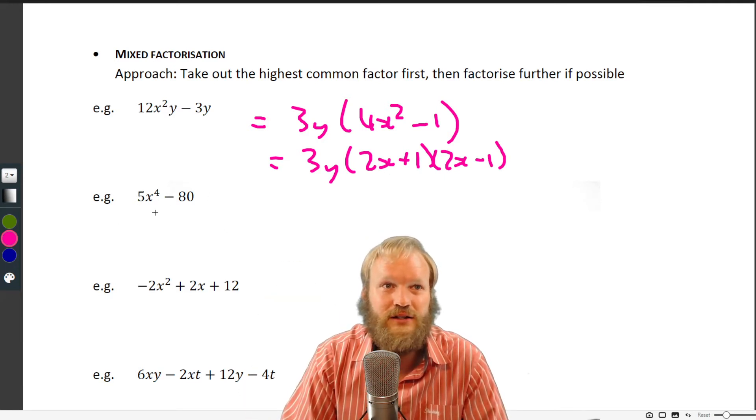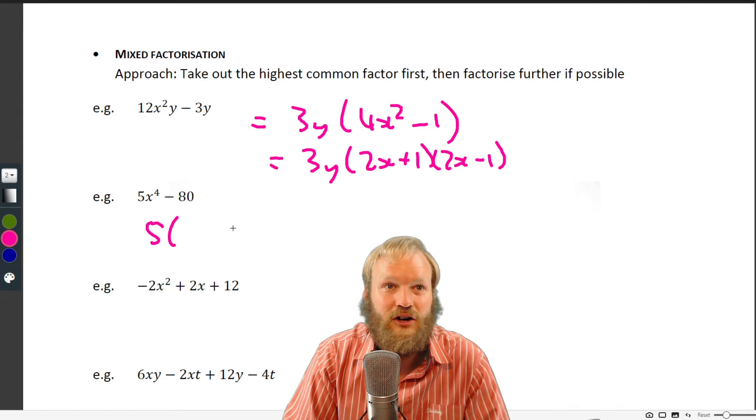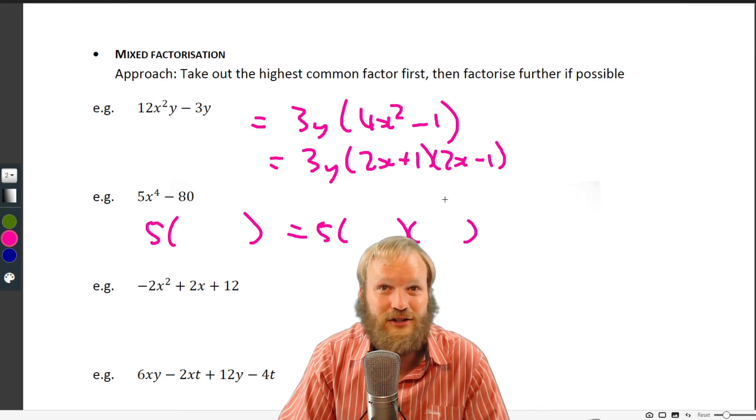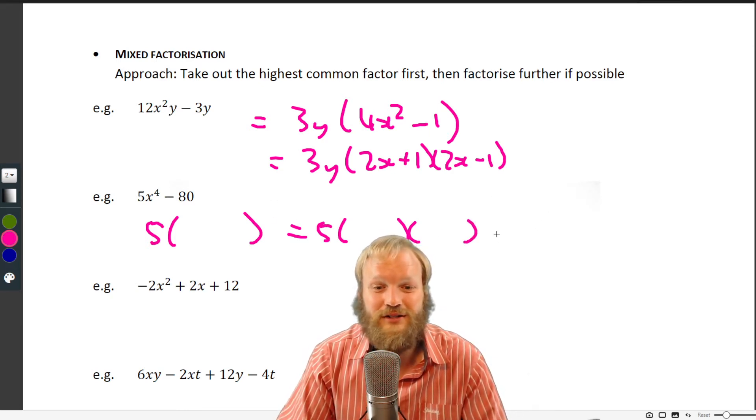5x⁴ - 80. Common factor looks like it's probably going to be a difference of two squares after that. Oh, it looks like it's going to be another difference of two squares, you know, so keep going along.